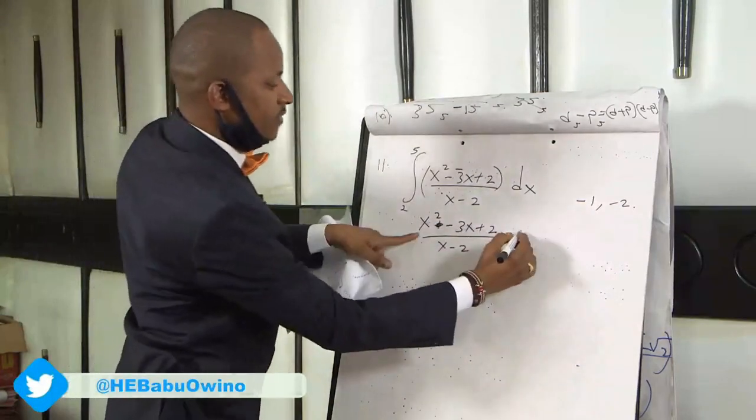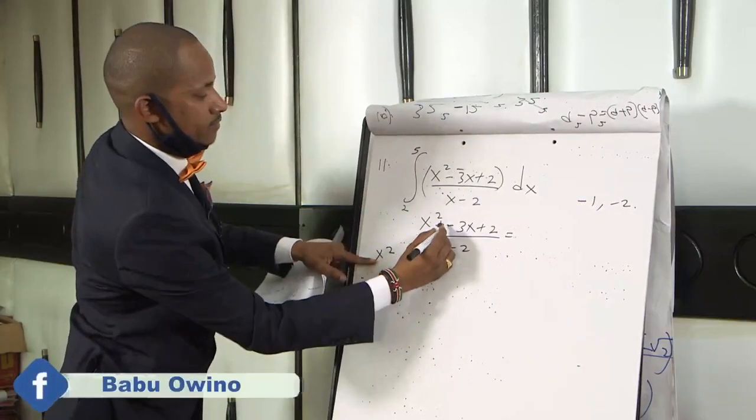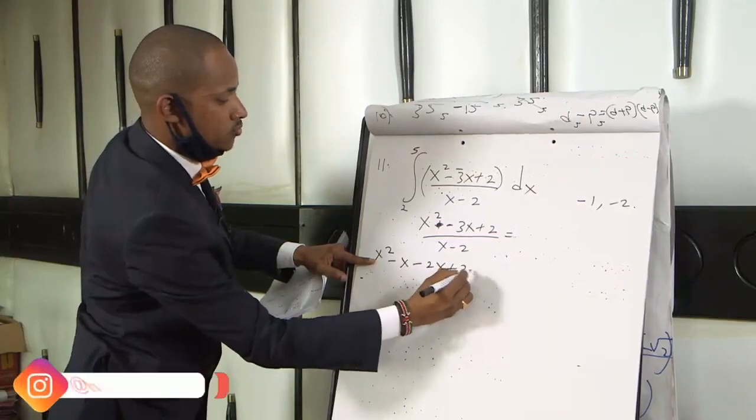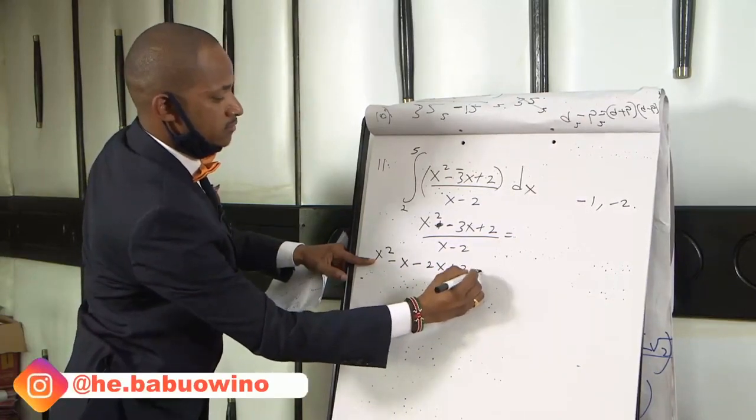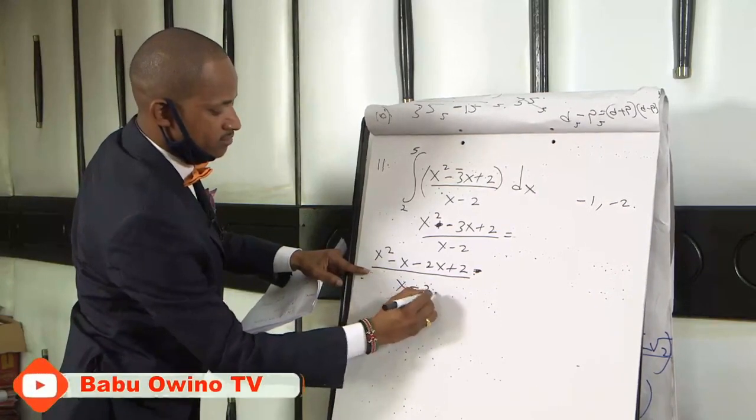So from here we expand it to x squared minus x minus 2x plus 2 divided by x minus 2.